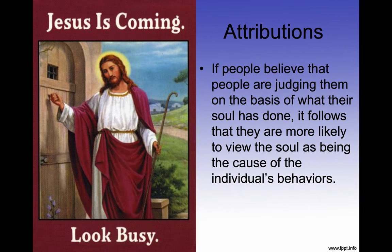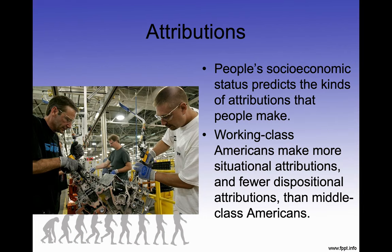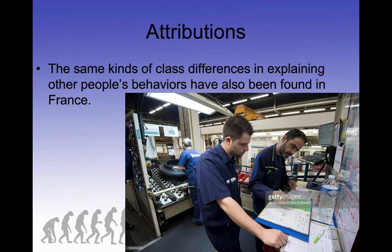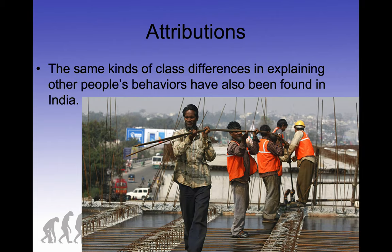In 2016 and 2020 working class Americans voted for Donald Trump. You might think that some of the things he's done would upset them, but they don't read things the same way that middle and upper class people do — they overlooked some of the negative things. It was the same pattern in France, Russia, and India. Working class people are less likely to look for personality reasons for something happening.